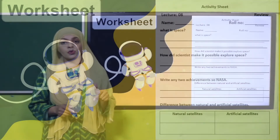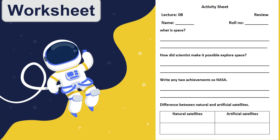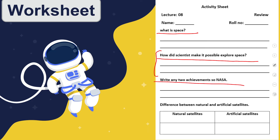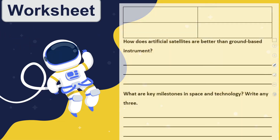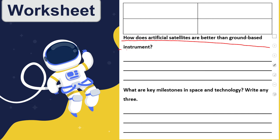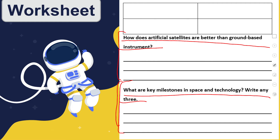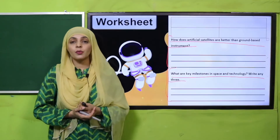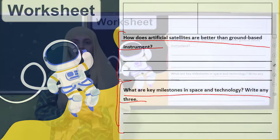Now is the time for practice. You can download this worksheet from the description box below this video, or get it in print form from your teacher. Write your name and roll number and then start the test. Questions include: What is space? How did scientists make it possible to explore space? Write any two achievements of NASA. What is the difference between natural and artificial satellites? How are artificial satellites better than ground-based instruments? Write any three key milestones in space and technology. Pause the video and complete the worksheet.